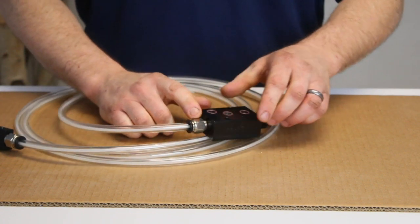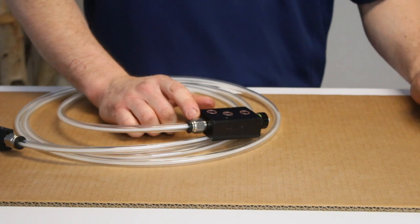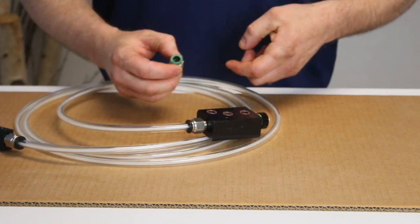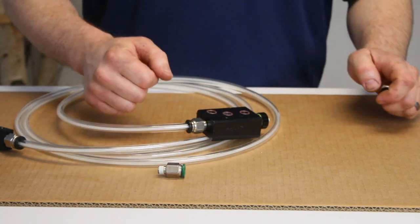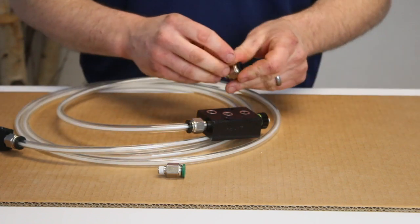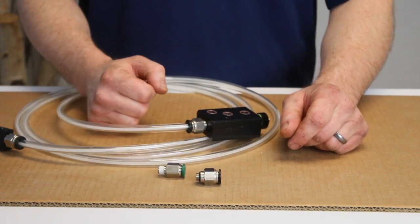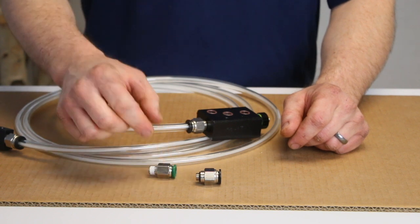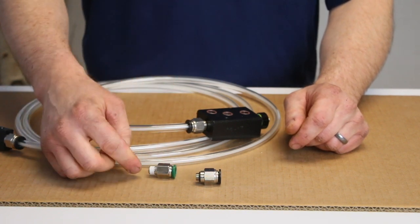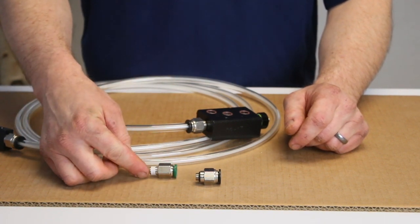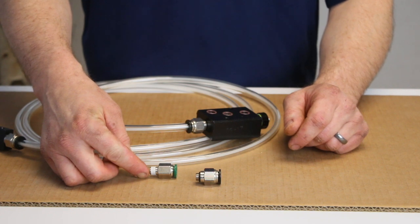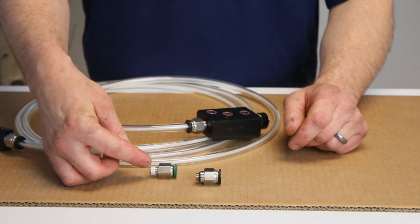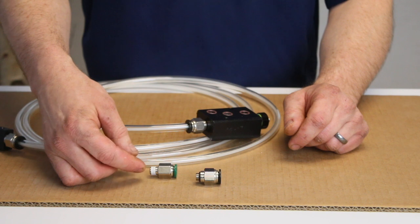Please note that there may be two different style push-in fittings on your pump. One style may have a green or silver release ring. The other may have a black release ring. The green or silver push-in fitting will have regular pipe thread fittings on it. This will require more torque and also sealant on the threads to seal it properly against the pump body.